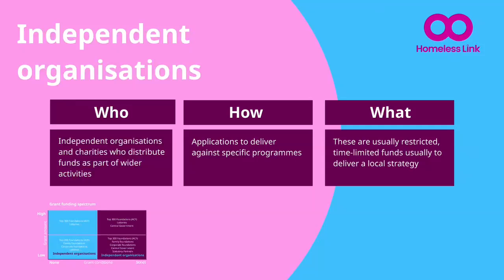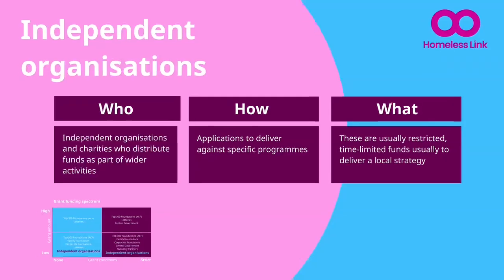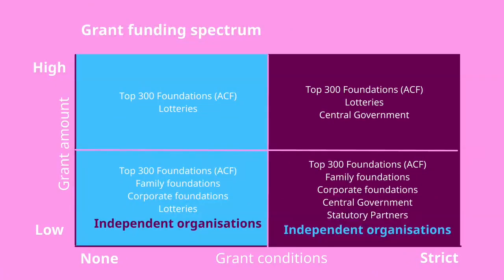The final group we will look at are other distributors and independent organisations, which might include profit-for-purpose organisations like the Energy Saving Trust, or charities like Mind and Homeless Link. They typically have a broader role than just grant giving, and often they will have received the funding from another source — a grant, a corporate partner, a government partner, or a local authority. They are usually distributing funds for a specific programme or project, and might be looking for partners to deliver a specific project locally on their behalf. They are more likely to be restricted and have expected outcomes and outputs, or deliver in a specific way. The amount available is often smaller, but still with restrictions and monitoring expectations.